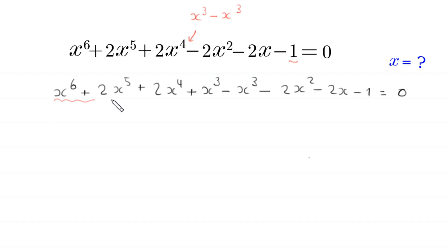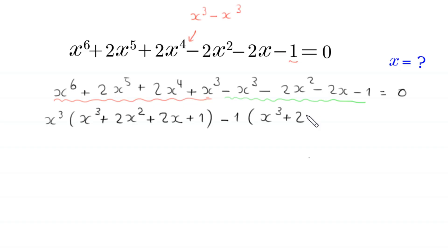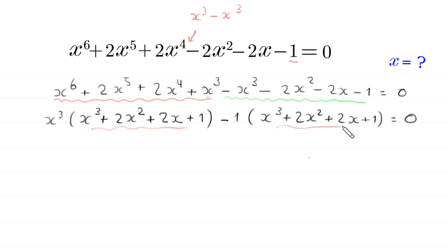Now from the first four terms we can factor out x cubed. So x cubed as common factor, in bracket left: x cubed plus 2 times x squared plus 2 times x plus 1. And from the remaining four terms we can factor out negative 1. Negative 1 as common factor, in bracket left: x cubed plus 2x squared plus 2 times x plus 1 is equal to 0. And as you can see this expression is a common factor, so we factor out this expression.